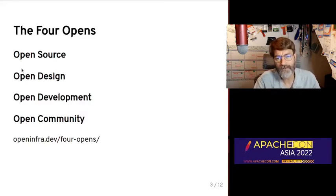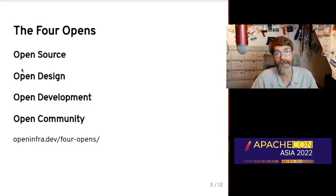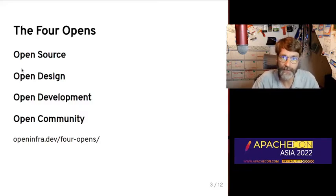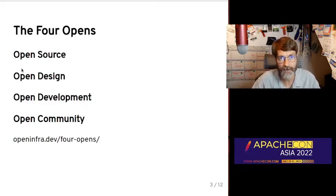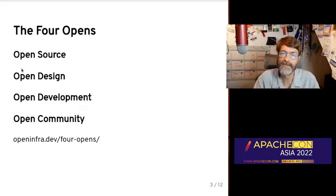In order for a community to actually be an open project, we have these other aspects. One of them is open design, which means that discussions about what we're planning next happen in public, with everyone participating and everyone able to see what is coming. The next is open development, meaning that the actual code changes are also visible to the entire community and up for discussion, debate, and contribution. And the final one is open community.